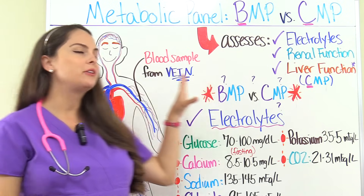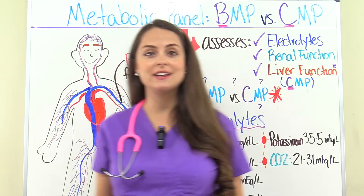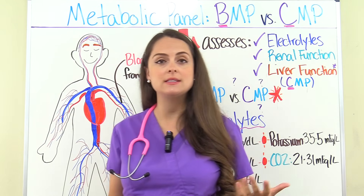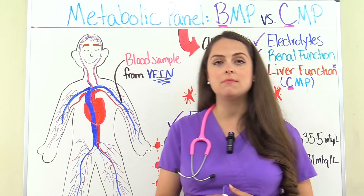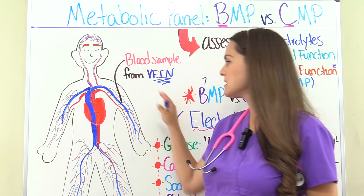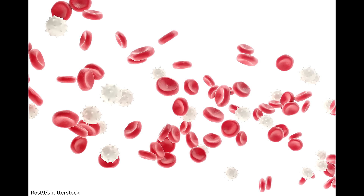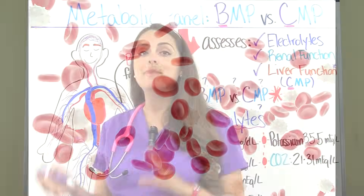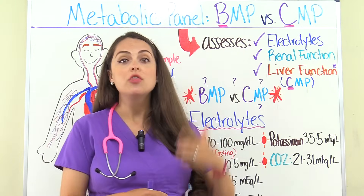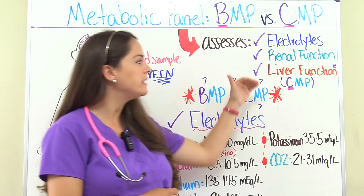A metabolic panel is a very common blood test ordered on a patient — just as common as the complete blood count, or CBC. The CBC looked at specific cells in the blood, like white blood cells, red blood cells, and platelets. A metabolic panel is going to look at electrolytes, the renal function of the person, and liver function.